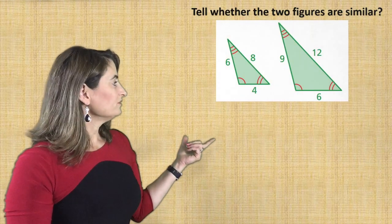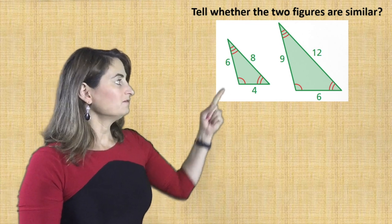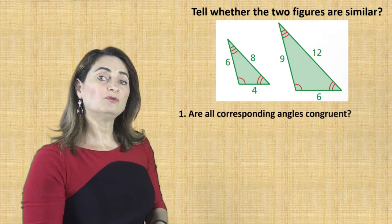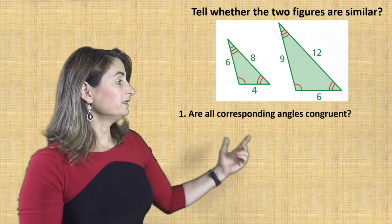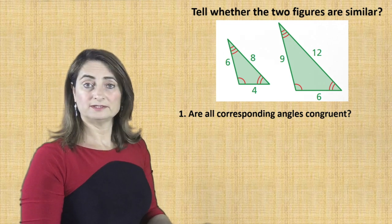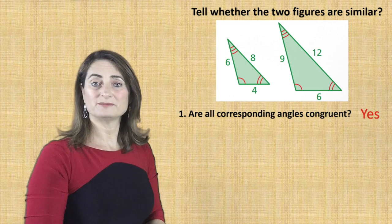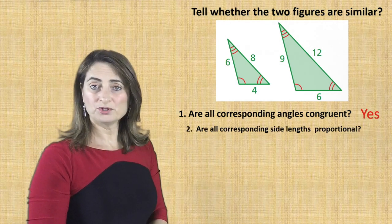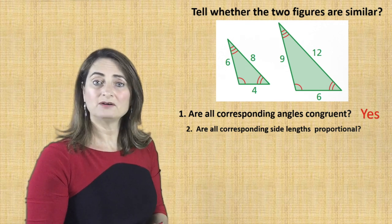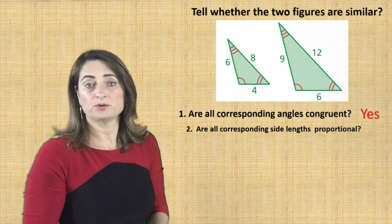Now let's see this example — tell whether the two figures are similar. We have two triangles. From the number of semicircles indicating the angles, I can tell which angle is congruent to which. All corresponding angles are congruent. And I can confirm from the number of tick marks on the sides. Now, are all corresponding side lengths proportional? We don't know — let's find out. The only way to find out is to set up your ratio. That's what proportion means.